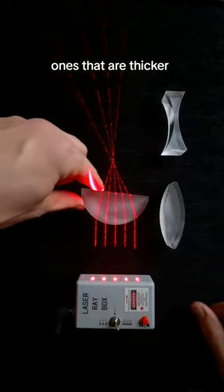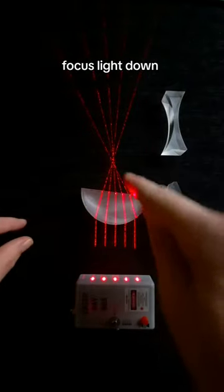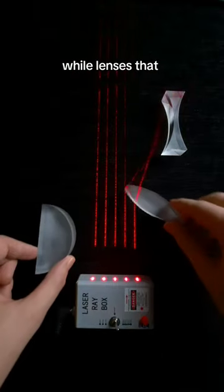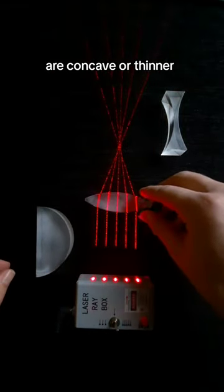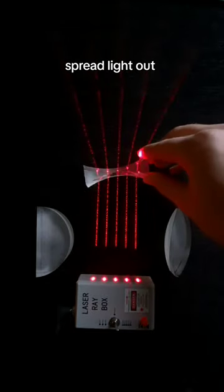Convex lenses, ones that are thicker in the center, like these two, focus light down to a point, while lenses that are concave, or thinner in the center, like this one, spread light out.